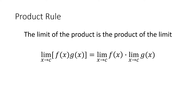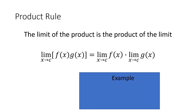Next we have the product rule, which says the limit of a product of two functions multiplied together is equal to the limit of f(x) times the limit of g(x). So if we were multiplying two functions together, like x times e^x, we can break this up — the limit as x approaches 3 of x times the limit as x approaches 3 of e^x — which gives us 3 times e³, or 3e³.